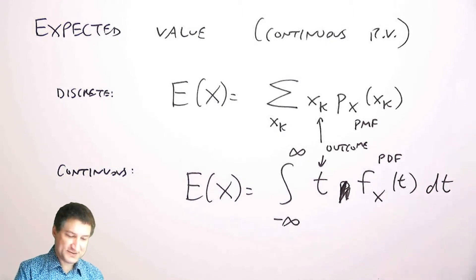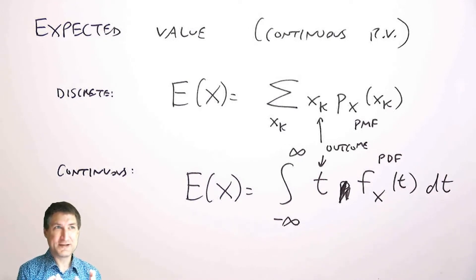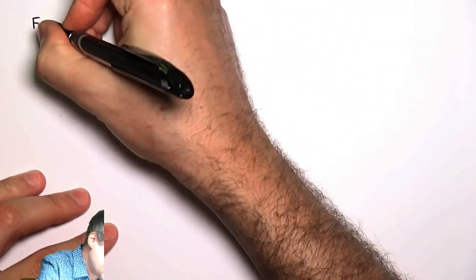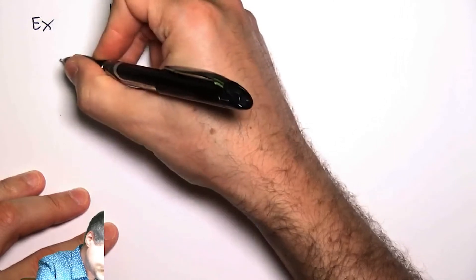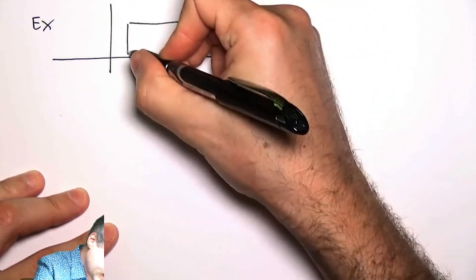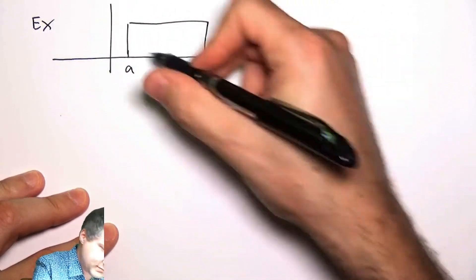So this is the bad news, is that solving expected value problems in continuous time always involves a lot of integration. So let's just do an example. Let's suppose that I have the uniform random variable, uniform between a and b.